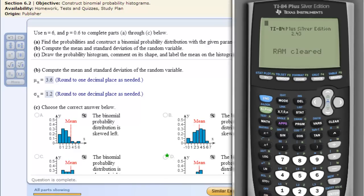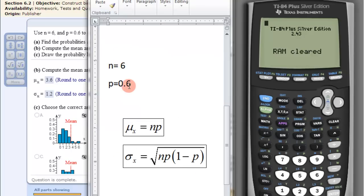So we can use a calculator to do that. And here's our formulas. Our n is 6. Our probability is 0.6. And so here's the mean, n times p.